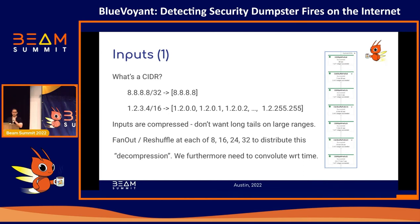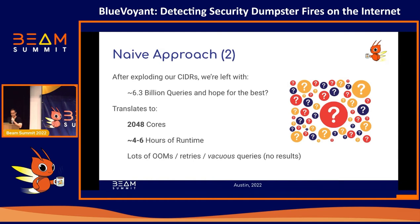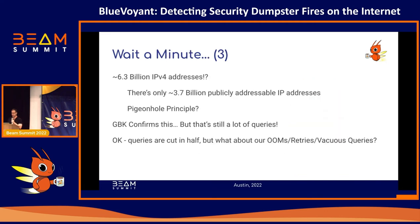We also need to convolve with respect to time when we issue these queries. After decompressing all of our CIDRs, we have 6.3 billion queries to execute. We took a naive stab at this first: over 2,000 cores, it took four to six hours of runtime. One of the problems with issuing this many queries is you get a lot of retries, things don't go through the network, some queries return a lot of data causing out-of-memory errors on workers, and other queries are completely vacuous — no data to be retrieved. At this scale, sending out all these queries and having workers wait for responses adds up in processing time, and when you're renting a core, that's dollars and cents.